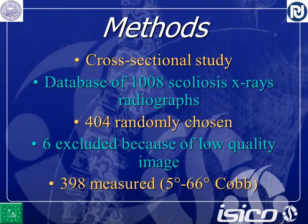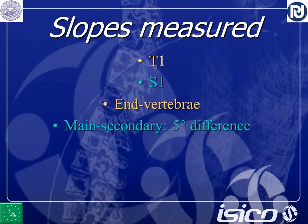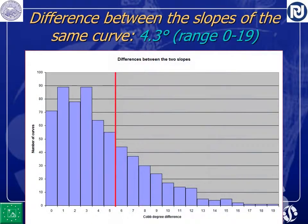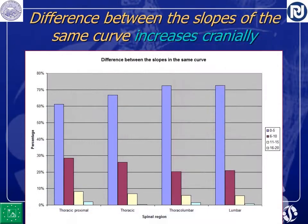Six cases were excluded because of low quality measurements, leaving 398 measured. We measured the slopes at T1 and at the end vertebrae, and we considered the main or secondary slope according to a difference of 5 degrees. With Cobb degrees we use 10 degrees difference to differentiate main and secondary curves. The difference between the slopes of the same curve on average in this sample was 4.3 degrees, with a range between 0 and 19. The caudal slopes are usually higher than the cranial slopes — this is true for thoracic and lumbar curves, though not for lumbar curves alone, and in proximal thoracic we have few numbers.